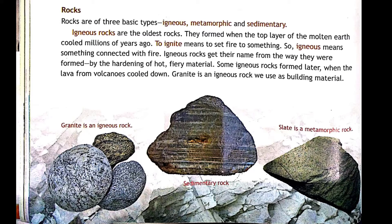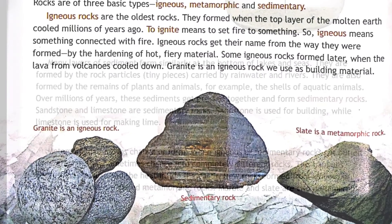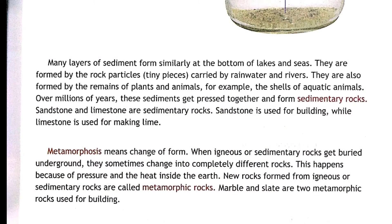Igneous rocks were formed by the hardening of the hot, burning material when lava from volcanoes cooled down. Granite is an igneous rock — we use it as building material, as you can see in this picture.